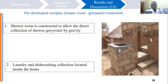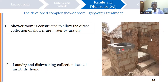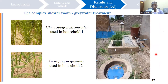Because the greywater system would be outside the household, it would be difficult for household members to carry laundry and dishwashing greywater outside to discharge into the treatment system. Therefore, we chose to develop a collection tank inside the house for laundry and dishwashing greywater. The treatment system is directly connected to the shower room.